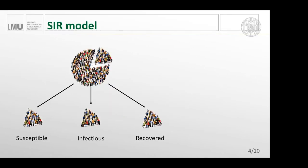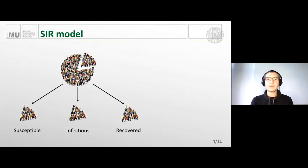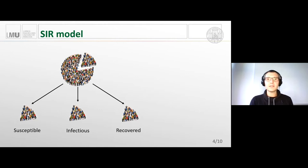Starting with the SIR model — it's a compartment model, meaning you take the population and partition it into compartments with some characteristic. Here we have three compartments: the susceptibles, who might contract a disease; the infectious, those who are infected and might infect others; and the recovered, those who already recovered and are no longer susceptible or infectious.